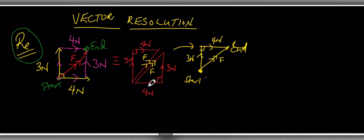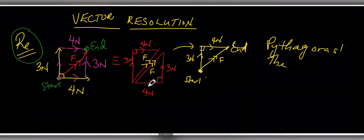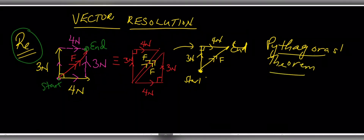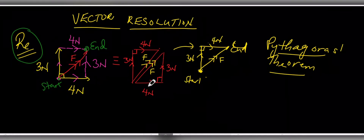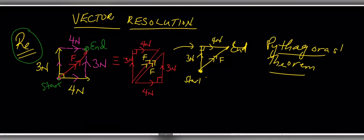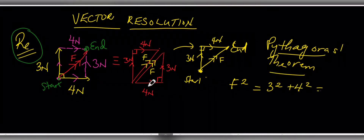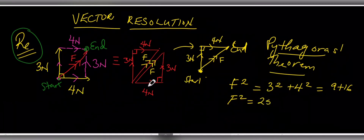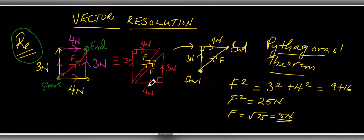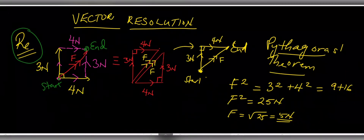We can now use Pythagoras's theorem. The sum of the squares of the two sides at right angles gives the square of the hypotenuse. So F squared equals three squared plus four squared, which gives nine plus sixteen equals twenty-five newtons squared. Therefore F equals the square root of 25, which is five newtons. This is a well-known three-four-five triangle.